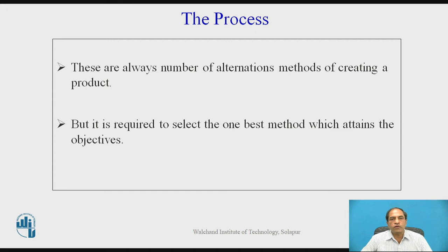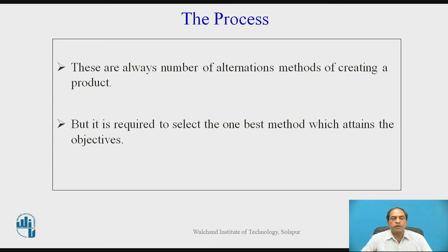The processes: once we understand the plant and product requirements, the next is process. There are a number of alternative methods for creating a product. A process is a conversion of one form of material into another form so as to enhance or create the utility of the product or service. We have a number of alternatives by which we can make this transformation process possible, and we have a choice to select the best process amongst them.